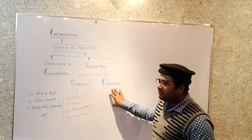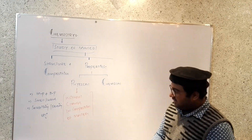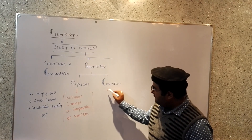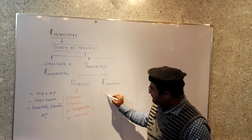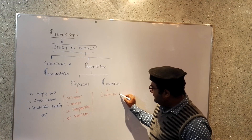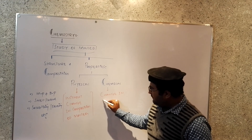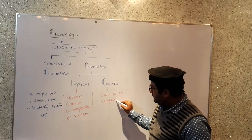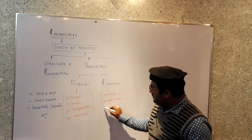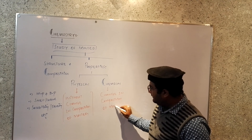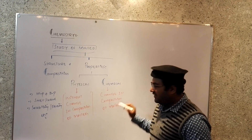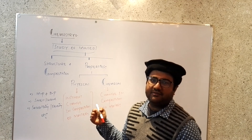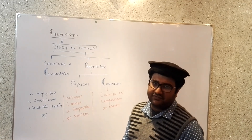Now what about the chemical properties? Chemical properties are those properties when we study them, there is a change in composition of matter and a new substance is formed. When we discuss them, the composition of the matter is changed and a new substance is formed.